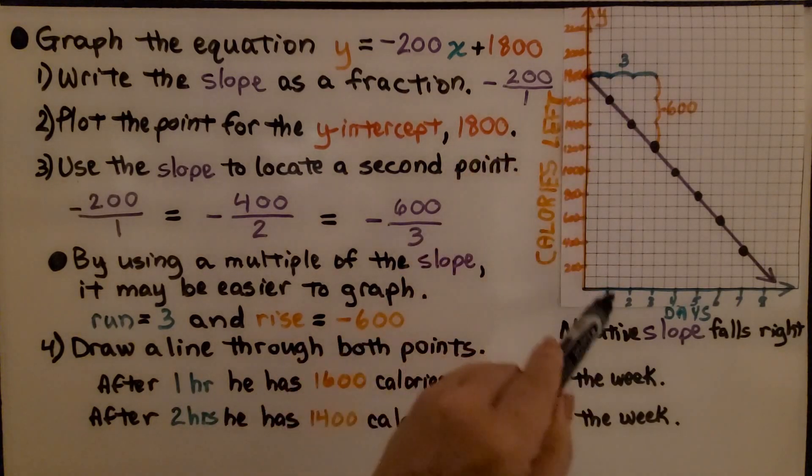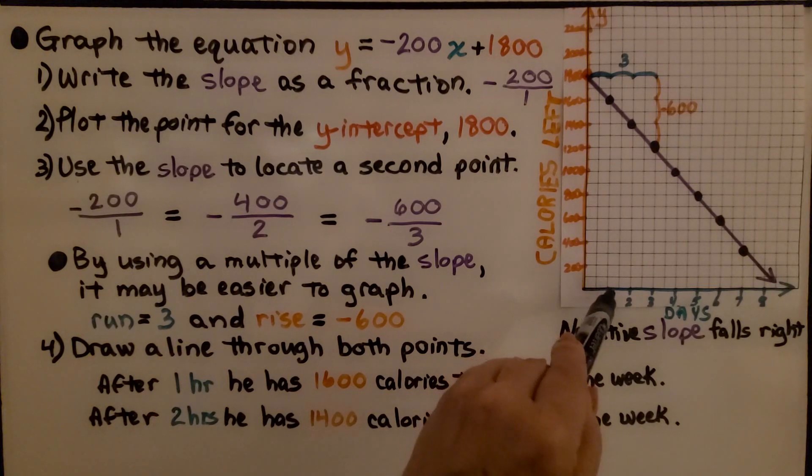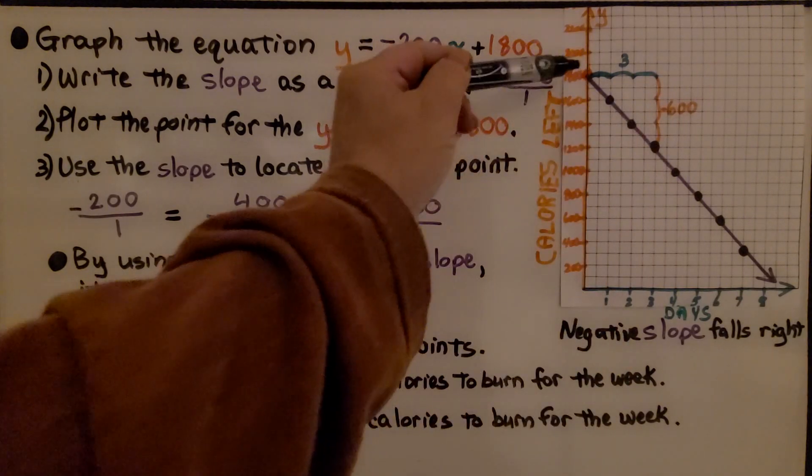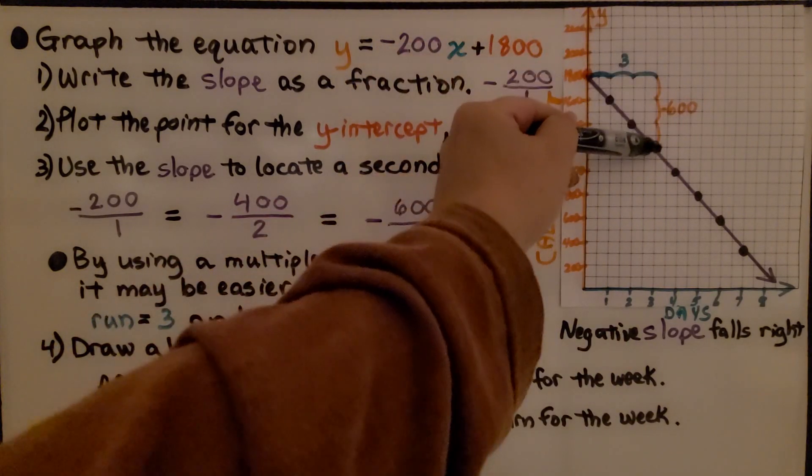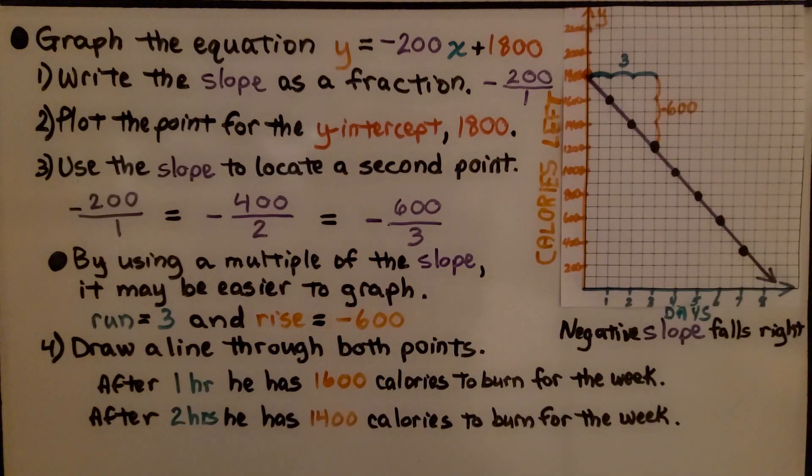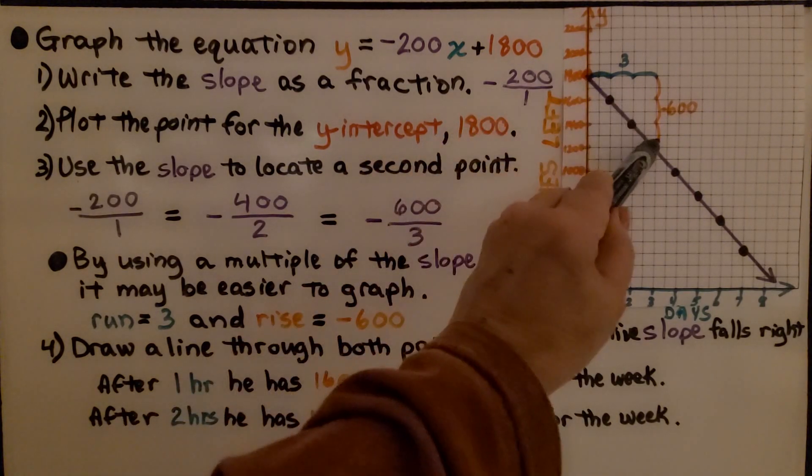Our run is 3 units. So we have 2 squares is 1 unit. So we go 1, 2, 3. That puts us here. And then we go down 600. That puts us right here. We draw a line through both points from the 1,800 through this point.